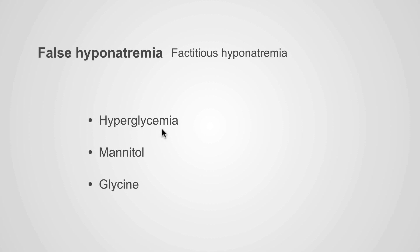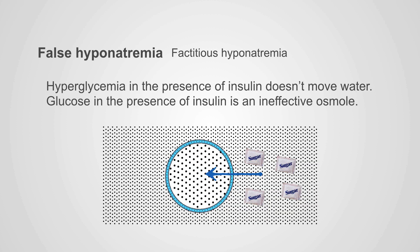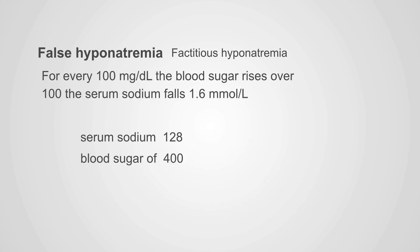We see factitious hyponatremia with hyperglycemia, which is pretty common. Mannitol is used to shift water out of cells to lower intracranial pressure. Glycine, a dilutant used in bladder and prostate surgery, can accidentally enter the blood and cause the same picture. Importantly, hyperglycemia in the presence of insulin doesn't move water — glucose with insulin is an ineffective osmol and will move into the cells under insulin's influence rather than causing a water shift out.